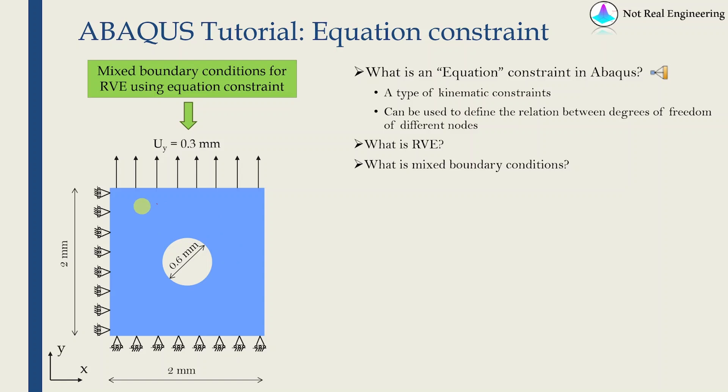Here is a very simple RVE which is a square with a circular hole in it and we want to apply uniaxial tensile load to this RVE. The mixed boundary conditions are to ensure that the response of this RVE under tensile load should be similar to response of the entire structure. For that we will use roller support on this left edge, roller support on the bottom edge and when we do that the node on this corner will be automatically fixed. Hence there will not be any rigid body movement. Then we will apply displacement boundary condition of 0.3 millimeter on this top surface.